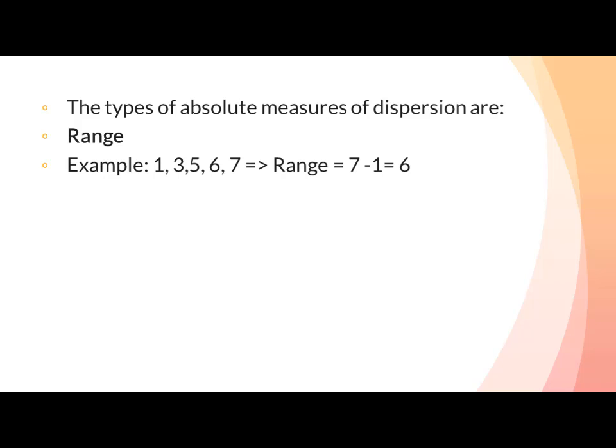When finding the range, we take the lowest value and the highest value and then subtract the lowest value from the highest value. The answer we get is the range of the data. As you can see in the example, 1 is the lowest value and 7 is the highest. Subtracting 1 from 7 gives a range of 6.